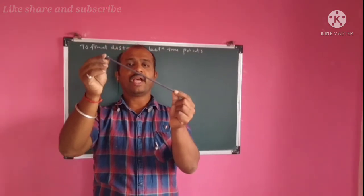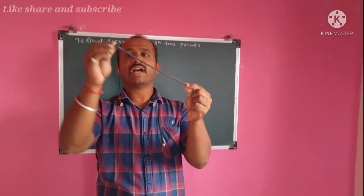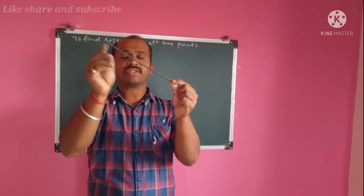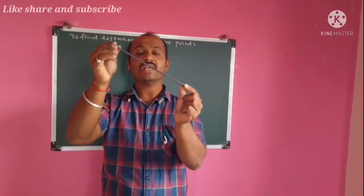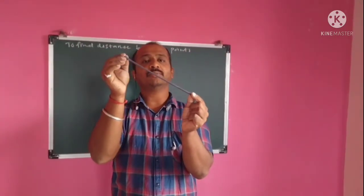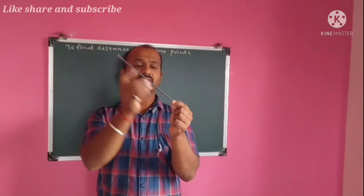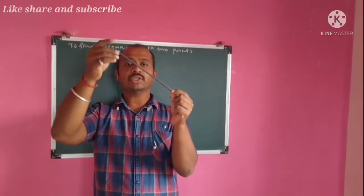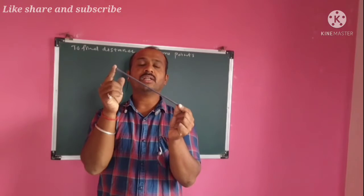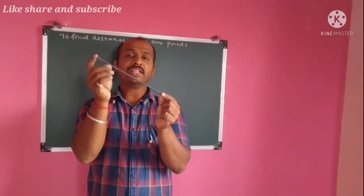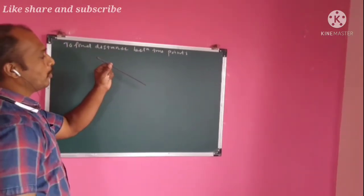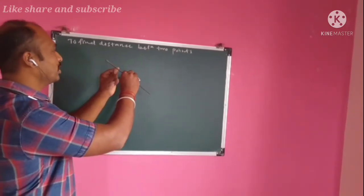If you want to find the distance between two points, firstly join these two points with a straight line. The true length of this line is the distance between these two points. The true length will only appear if this line is parallel to the VP.